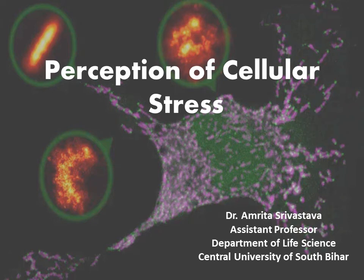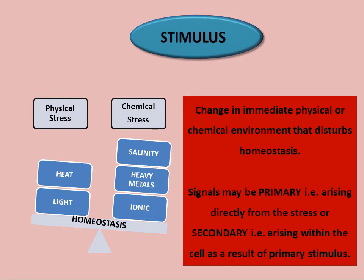The very first step of survival of an organism in response to any environmental stress is the perception of the fact that the environment has changed — this is called perception of stimulus. A stimulus is any change occurring in the vicinity of the organism where it is living, whether it is a physical stress such as heat or varying light patterns, or a chemical stress such as salinity or heavy metals, that can bring about a change in the organism's homeostasis.